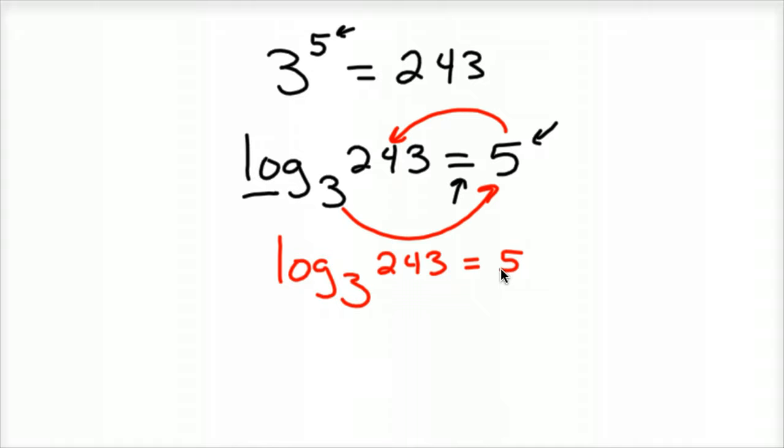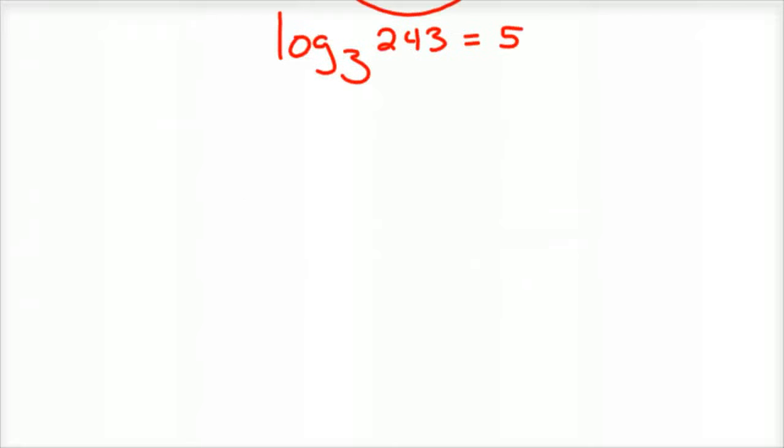So that is that one. Alright. Maybe let's do this one. So let's say we had 5 squared equals 25.